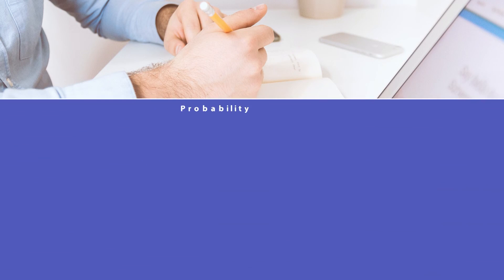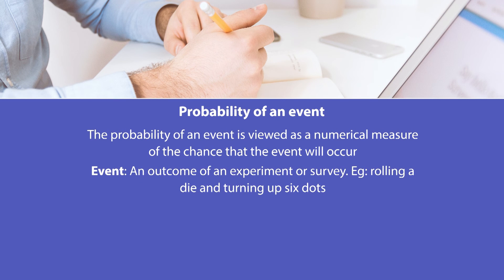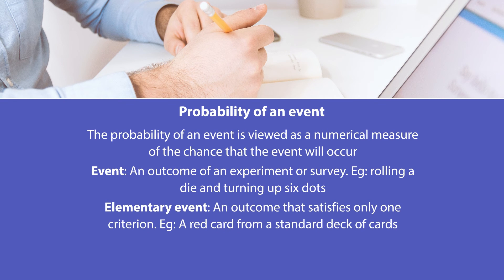The probability of an event is viewed as a numerical measure of the chance that the event will occur. An event is an outcome of an experiment or survey — for example, rolling a die and turning up 6 dots. An elementary event is one component of an event — an outcome that satisfies only one criterion, such as drawing a red card from a standard deck of cards.